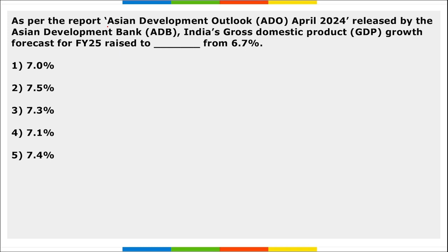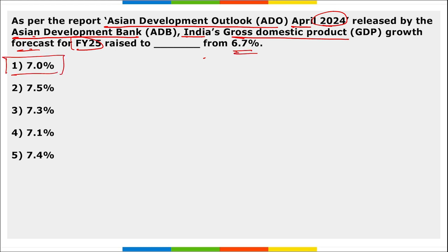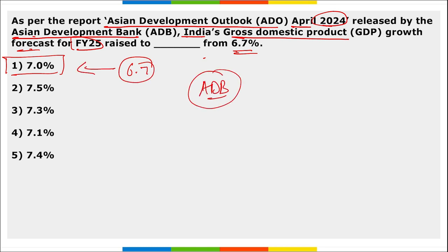As per the Asian Development Outlook of April 2024 released by the Asian Development Bank, India's GDP growth forecast for FY24 has been raised to 7 percent from the earlier 6.7 percent, as per the Asian Development Bank's GDP growth forecast.